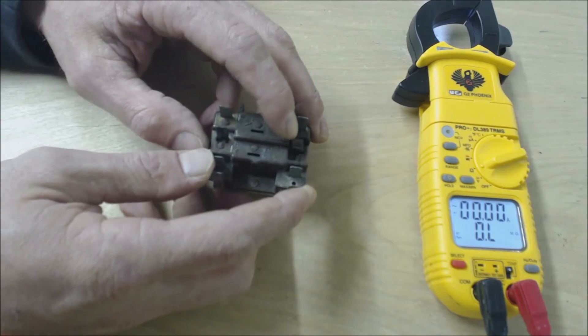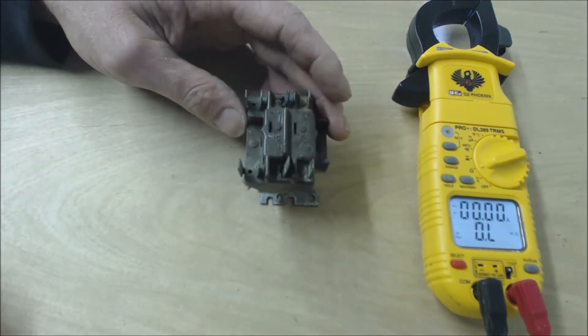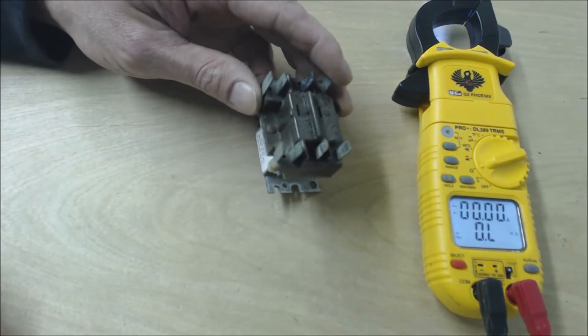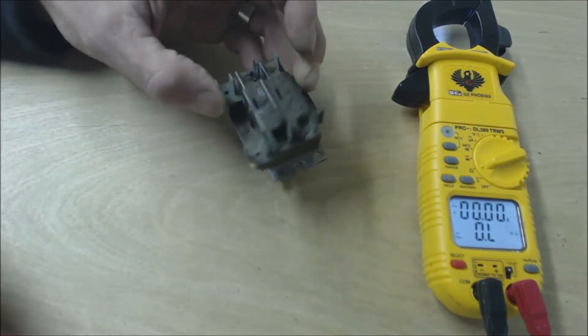The actual wiggle, you know, they're bad. So you replace this with one same part number or same ratings on the rating plate. Make sure the coil is the same type of coil.